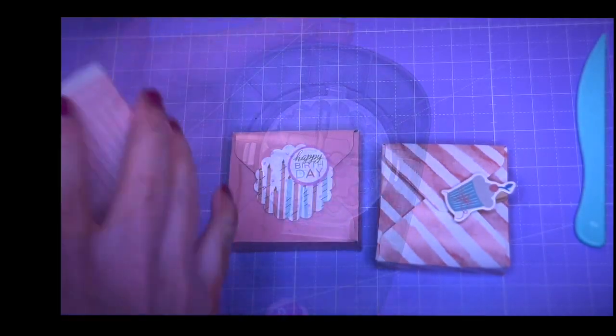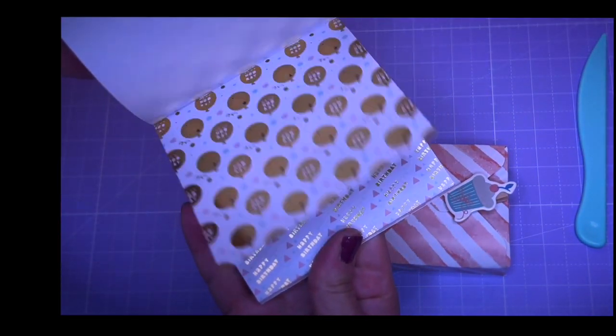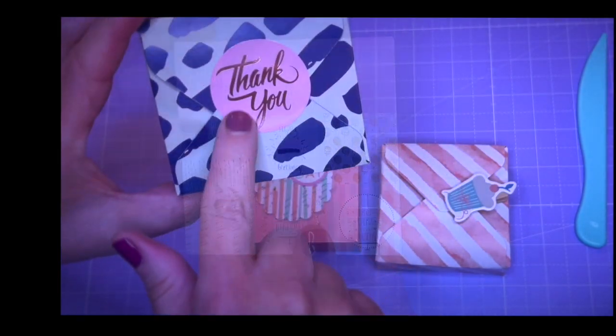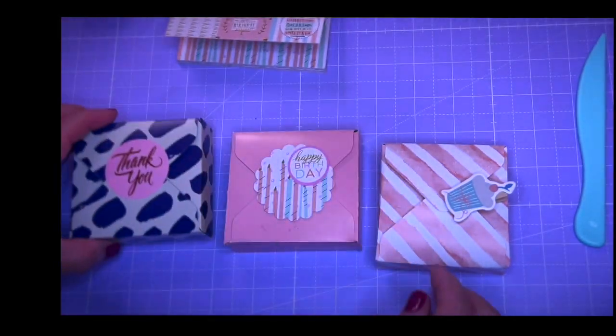And by the way this is the punch that I used to make these scalloped circles here. I just used some design papers from the dollar store. In this example I used a sticker, you can also create your own stickers of course.